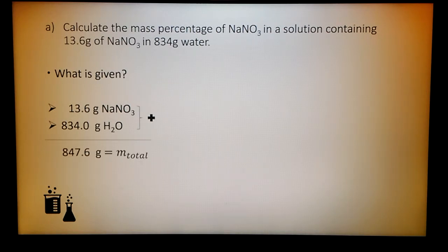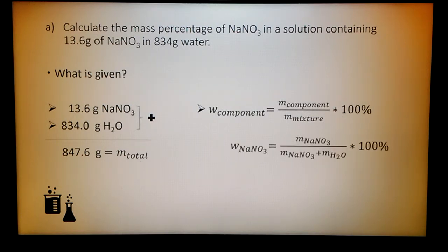Now, you have to insert the numbers into the formula. We are searching for the mass percentage of sodium nitrate. So, the component is sodium nitrate. You have to divide by the mass of the mixture, which is the mass of sodium nitrate plus the mass of water, multiplied by 100%. The mass of sodium nitrate is 13.6 grams and the total mass is 847.6 grams. So, the mass percentage is 1.6%.